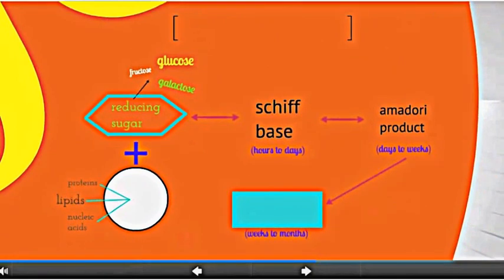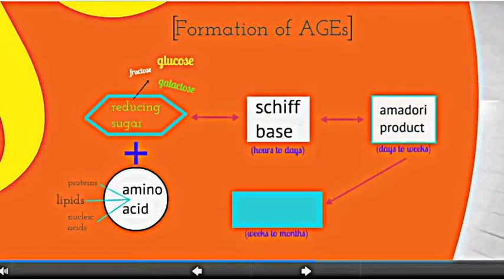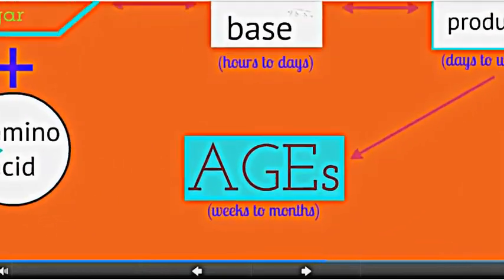The formation of AGE spontaneously occurs when the unpaired electrons from the amine group, which are found on proteins, lipids, and nucleic acids, are transferred to the carbon of the reducing sugar's aldehyde or ketone carbonyl group, creating a temporary Schiff base and the Amadori product, which is then oxidized to form an irreversible AGE.